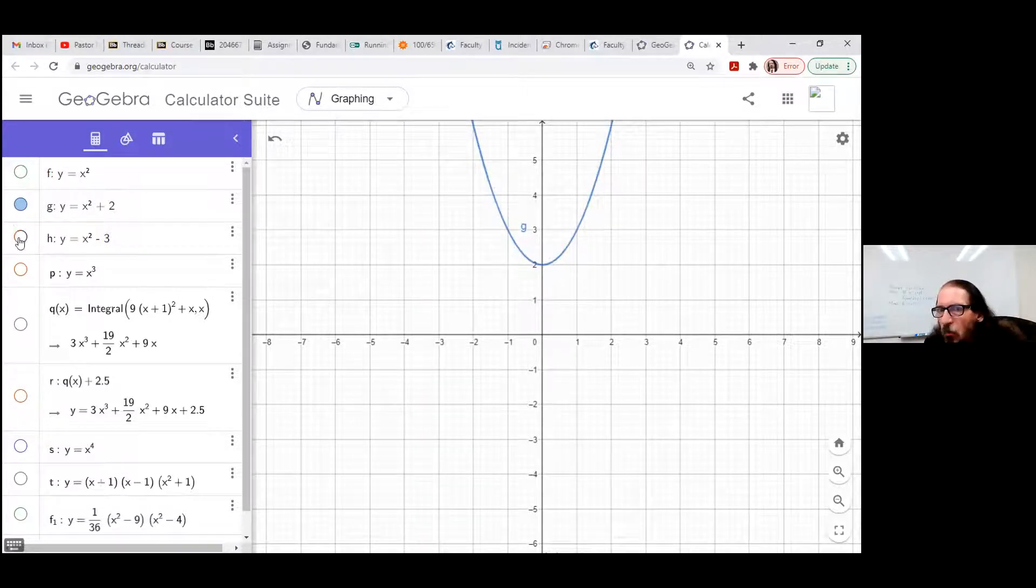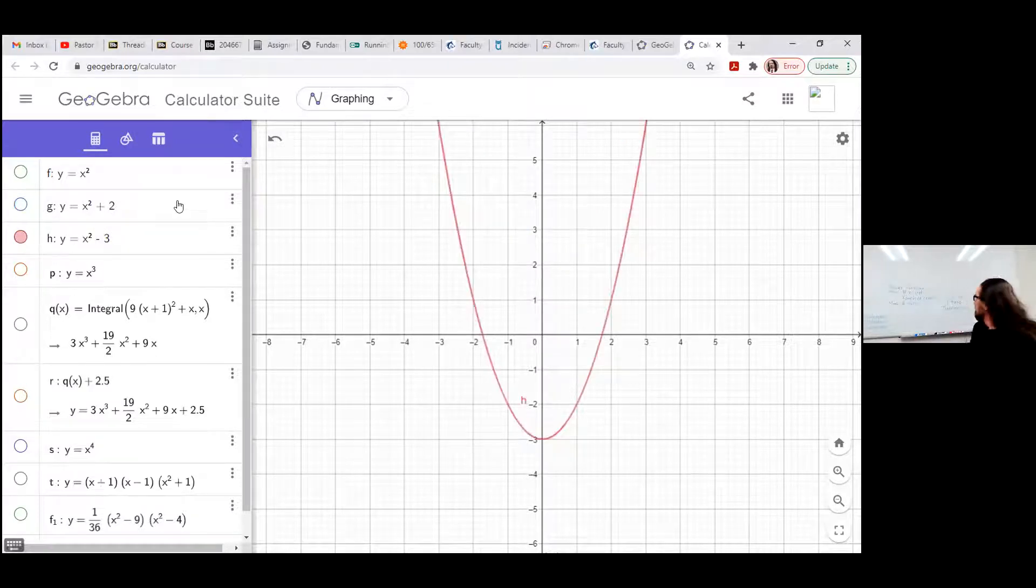If we shift it down, now we've got two x-intercepts and still one turning point. So we could have, for y equals x squared, or in general for some quadratic function, some degree two polynomial, two, one, or zero x-intercepts, and only one turn.